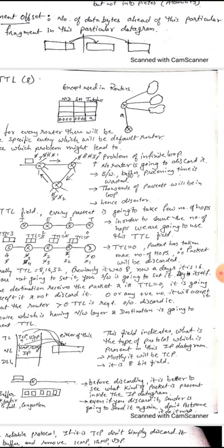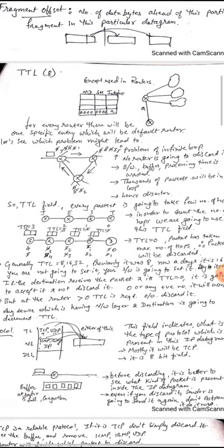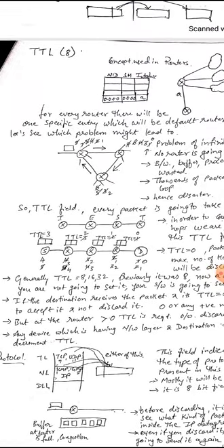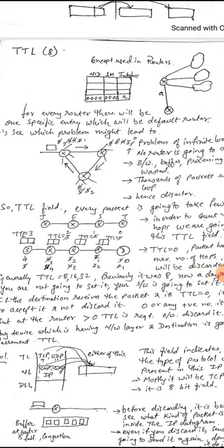The TTL field prevents infinite routing loops. Every packet takes a certain number of hops — each hop being a router jump. The TTL value is set by the host initially and is decremented by every router along the path. When TTL reaches 0, the packet must be discarded, limiting the maximum number of hops a packet can take.